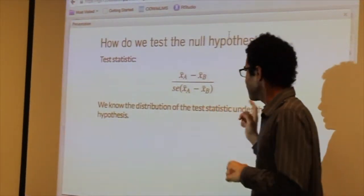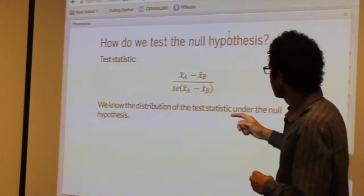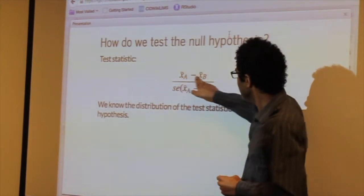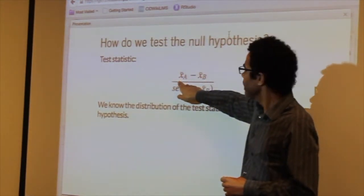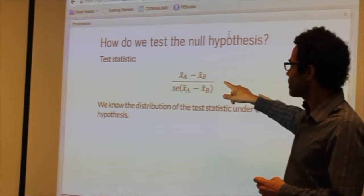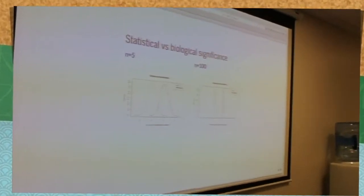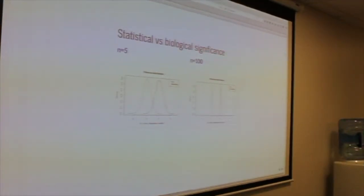So to find significantly, we'll get to that in a second. So what you care about really is this difference here. And we find what's called a test statistic. You say 100 is the sample. Exactly, exactly. You say 100 samples of group A and 100 samples of group B.